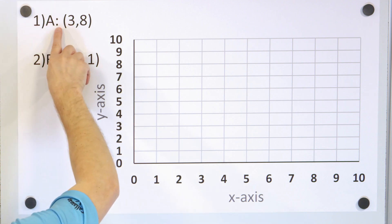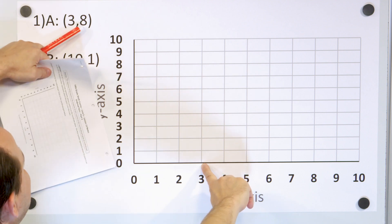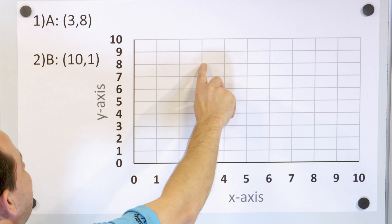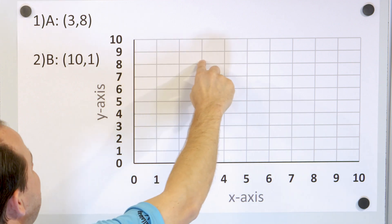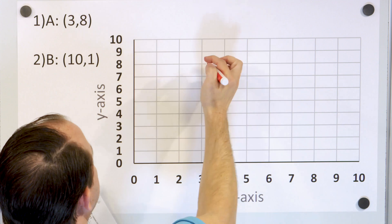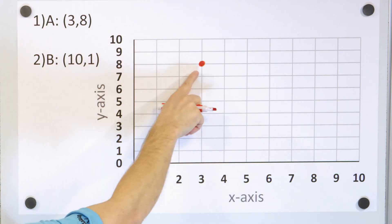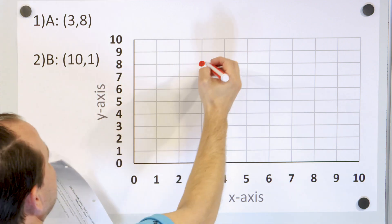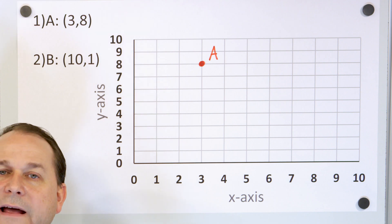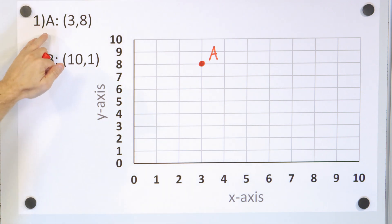To plot point A, we go to x equals 3, which is right here, and then y is 8. So from this point, we go up 1, 2, 3, 4, 5, 6, 7, 8. Notice y is 8 and x is equal to 3, so the point is going to be right here at x equals 3 and y equals 8. We label it point A — typically we put the point on the graph and then the label.